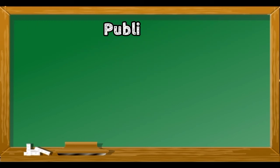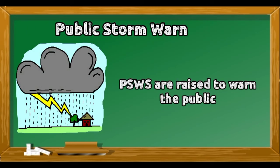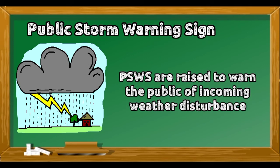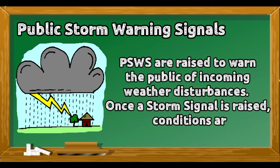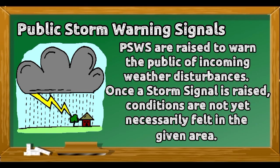Public storm warning signals are raised to warn the public of incoming weather disturbances. Once a storm signal is raised, conditions are not yet necessarily felt in the area.